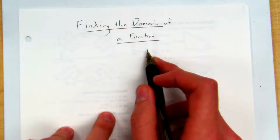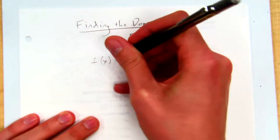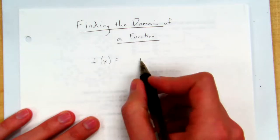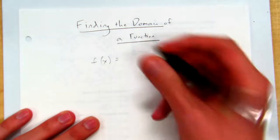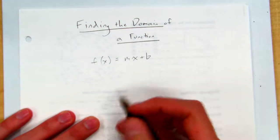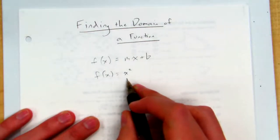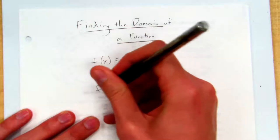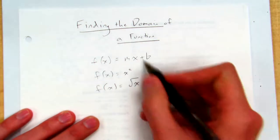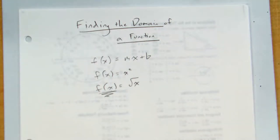First of all, let's review what a function is. We have function notation: f of x equals something. Most of what we did in Chapter 3 was linear functions — f of x equals mx plus b. But there are other kinds of functions too, like f of x equals x squared, which makes a parabola, or f of x equals the square root of x.